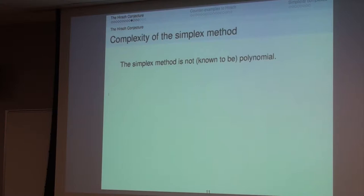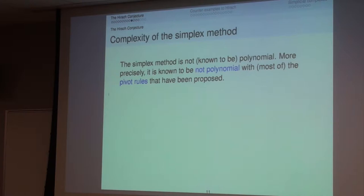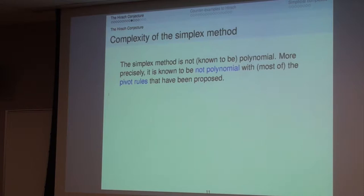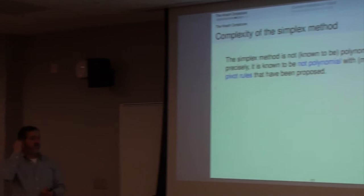The simplex method is not known to be polynomial. With most proposed pivot rules, it is actually known to be not polynomial. In the simplex method, you move along the graph and have choices at each vertex — you look at neighboring vertices with a better objective value and choose one. This choice is called the pivot rule. You can choose the edge with the largest gradient (Dantzig's original rule), the vertex with the largest value, a random edge, or many other things. All of them reach the optimum.